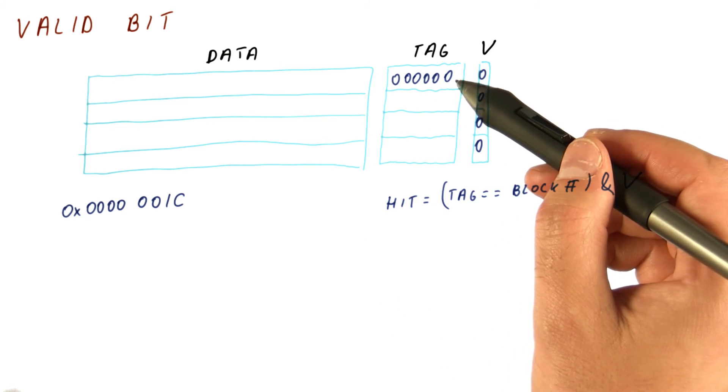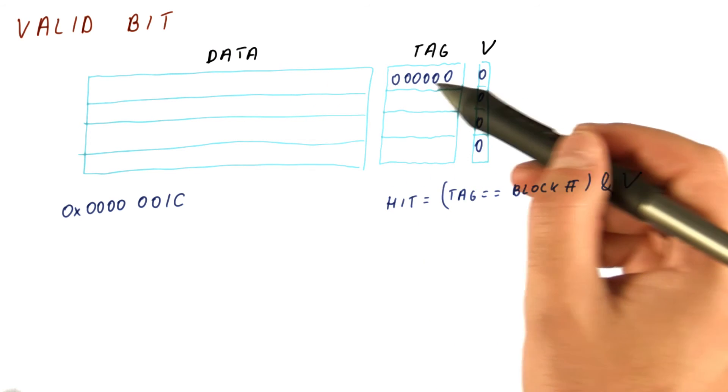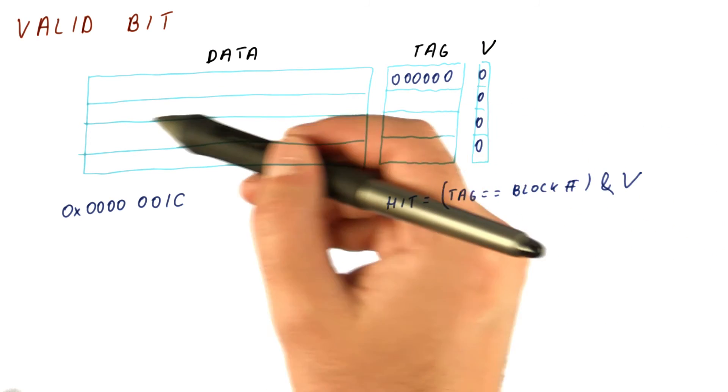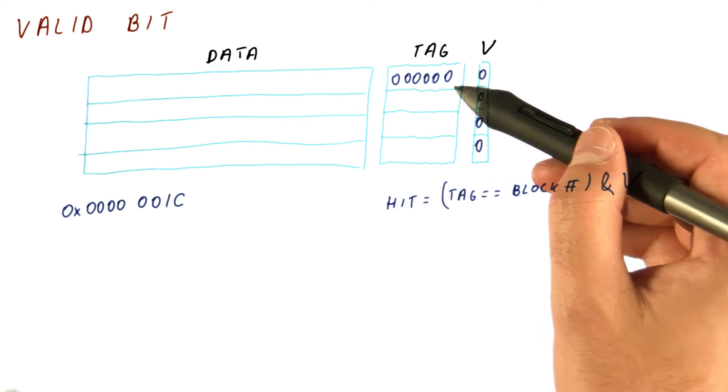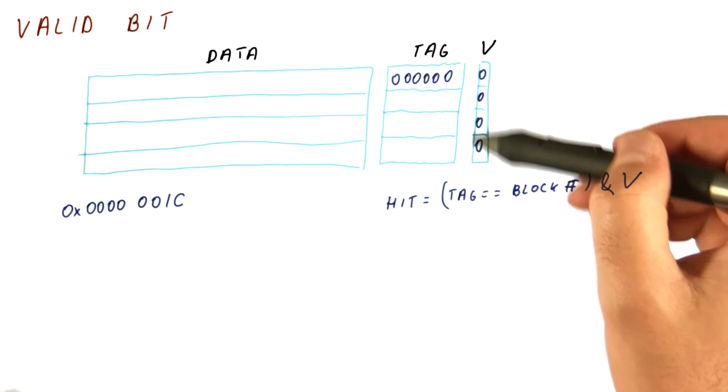And thus we also remove the problem of initializing the data and the tag. We can leave anything here. These don't need to be zeroed out as long as the valid bit is set to zero correctly.